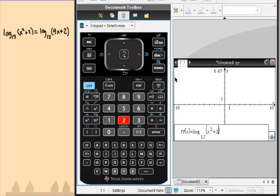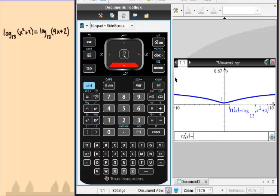And then just arrow key down and put in the second logarithm, which is going to be a log base 13 again. So log base 13, and then tab over to 9x plus 2. Alright, and get that guy in there.